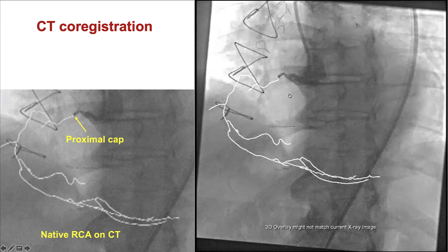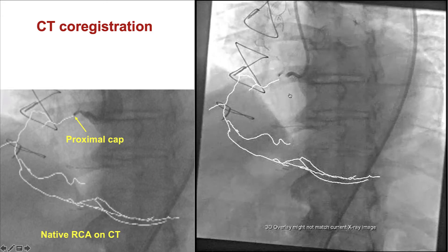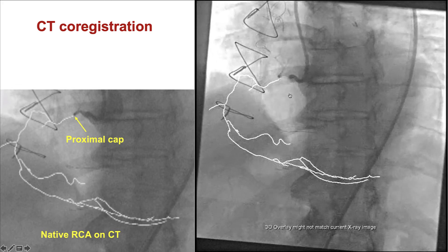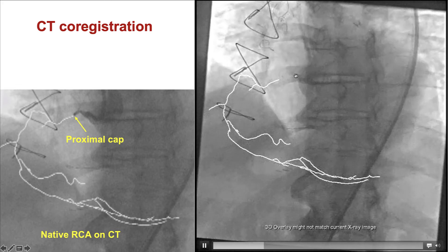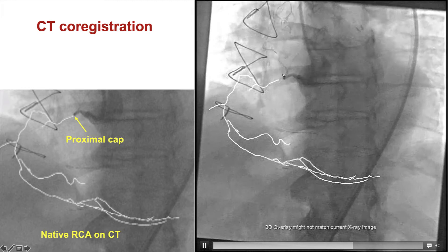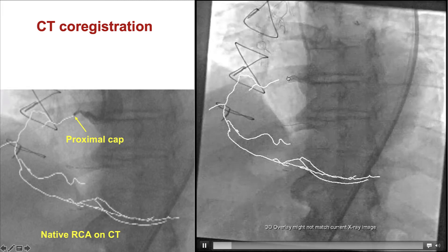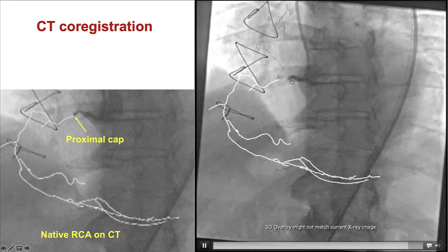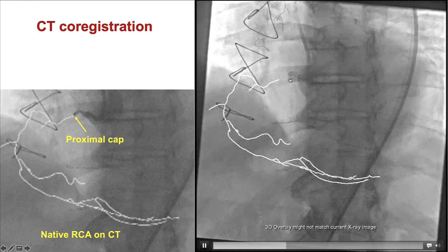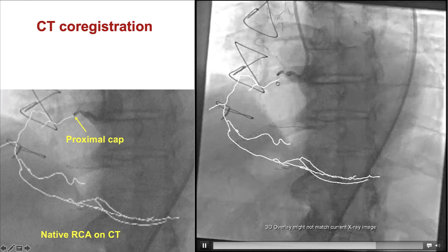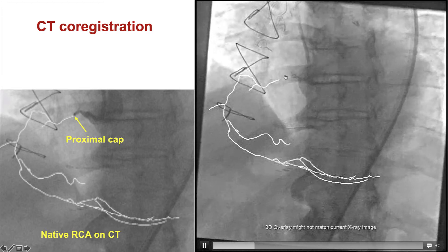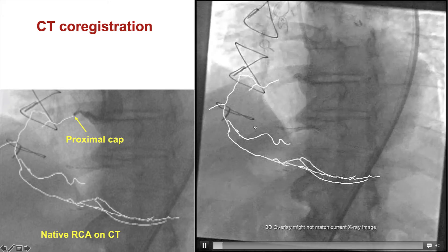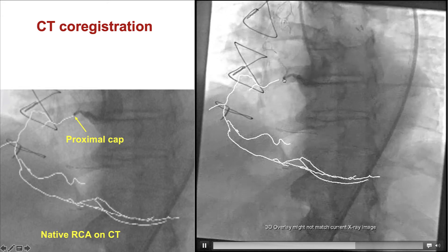This was one case in which we performed CT angiography beforehand. CT angiography can be extremely useful to clarify proximal cap ambiguity. We can see here that there is a small branch at the proximal cap, making it very difficult to understand where the vessel originates. Co-registration — an extra tool that fuses CT images with the angiogram — also allows an estimate of the course of the vessel, and we can see there is significant tortuosity.